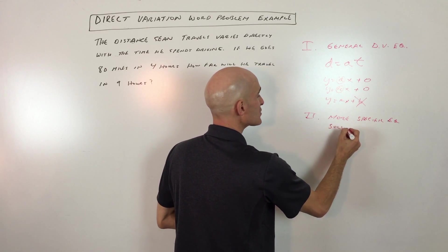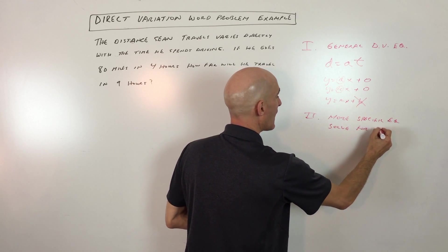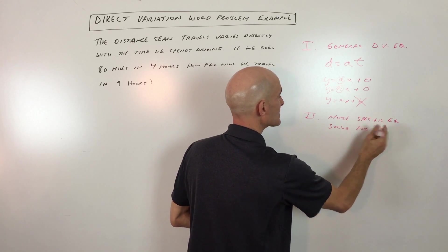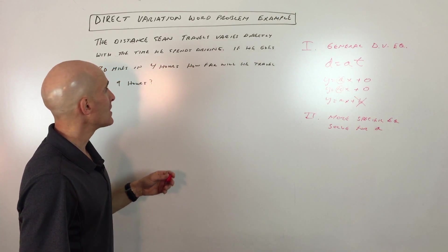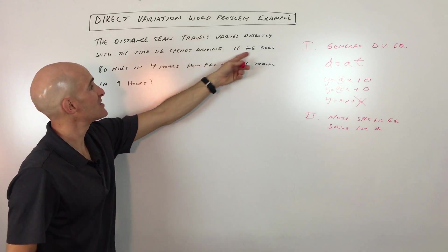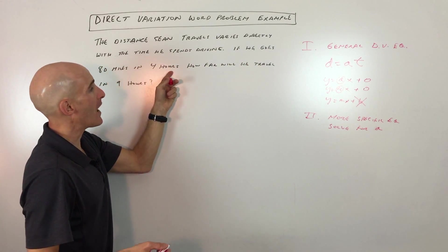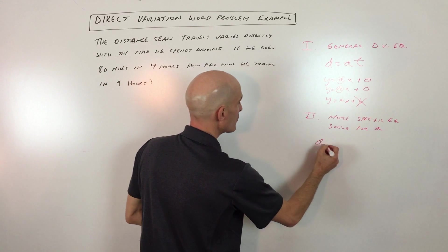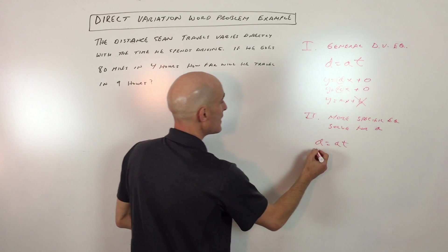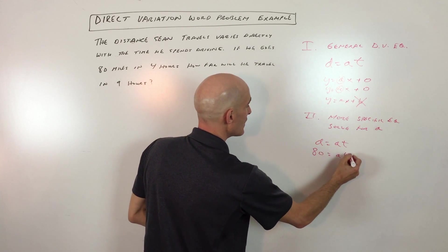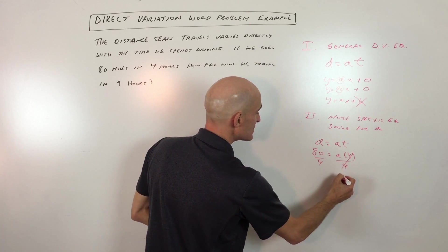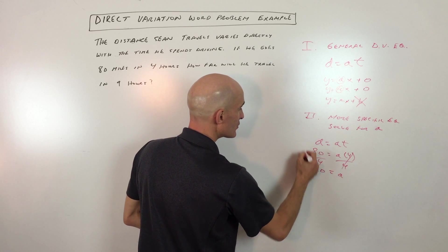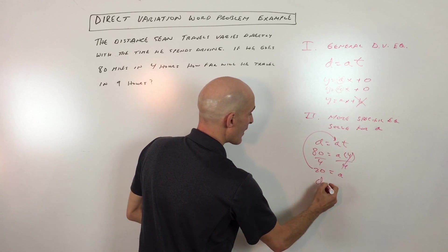Step two: solve for a, the constant of variation, or k, whichever one your book uses. The way we would do that is they give us some information. They say if he goes 80 miles in four hours. We started with distance equals a times t. If he goes 80 miles in four hours, we can solve for a by dividing both sides by four, and you can see that a equals 20.